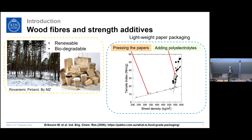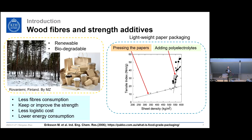Why is density so important? Because when you have the same amount of fibers, the higher the density, the thinner the paper will be. Imagine carrying a milk box home — the paper packaging is very thin, and there's a risk it might collapse on the way. With dry strength additives, we are able to make stronger and lighter paper packaging board. This way we use less fibers but can still keep or even improve strength. In addition, we can save logistic costs and lower energy consumption in both production and waste recycling.